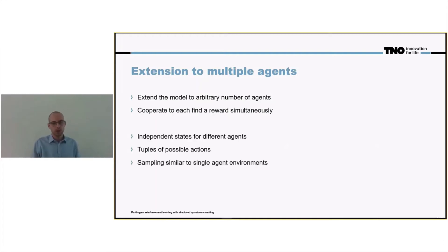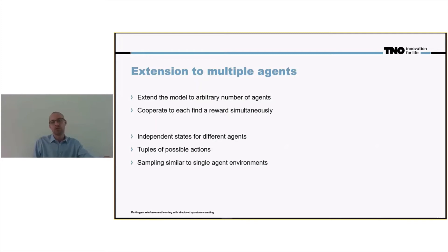How do we do that? We take again a neural network. We take independent states for the different agents. So for each agent, we have a node for all possible states, and we take tuples of all possible actions.